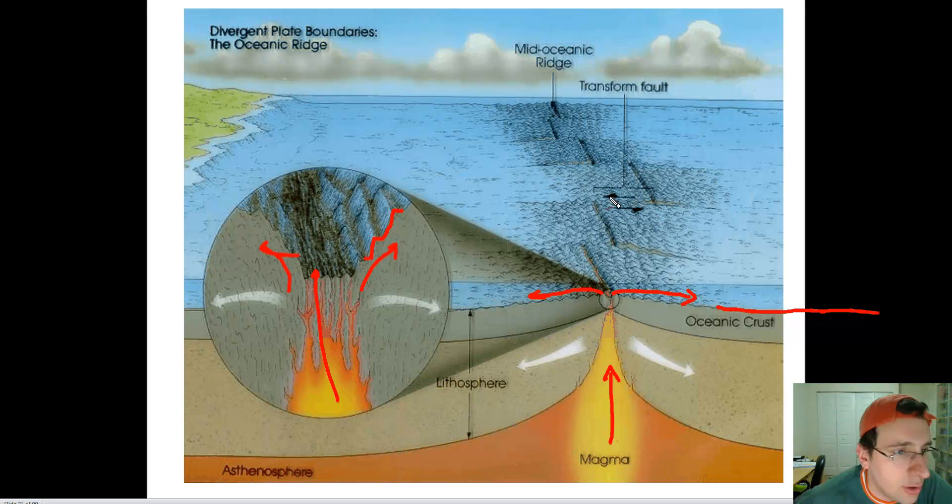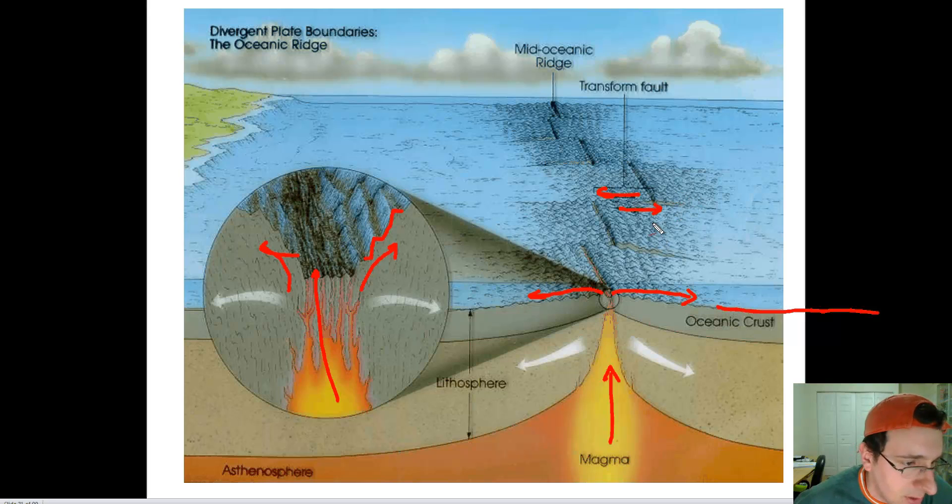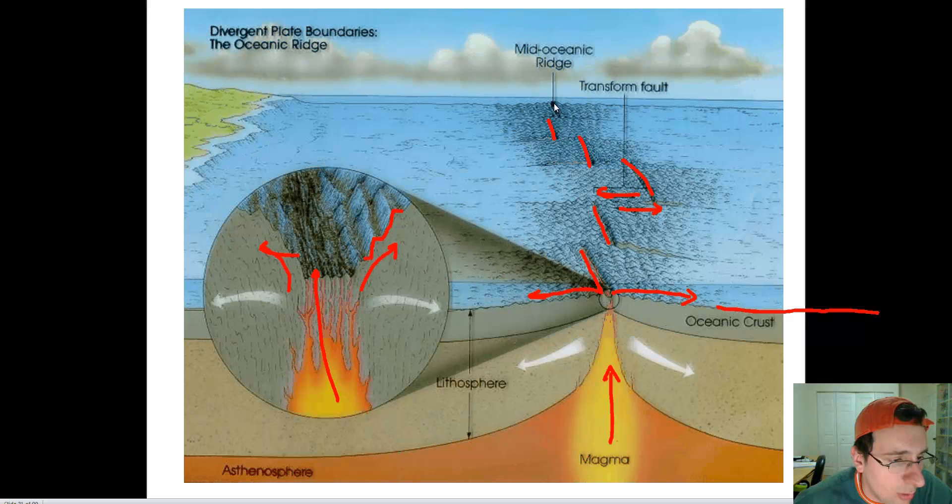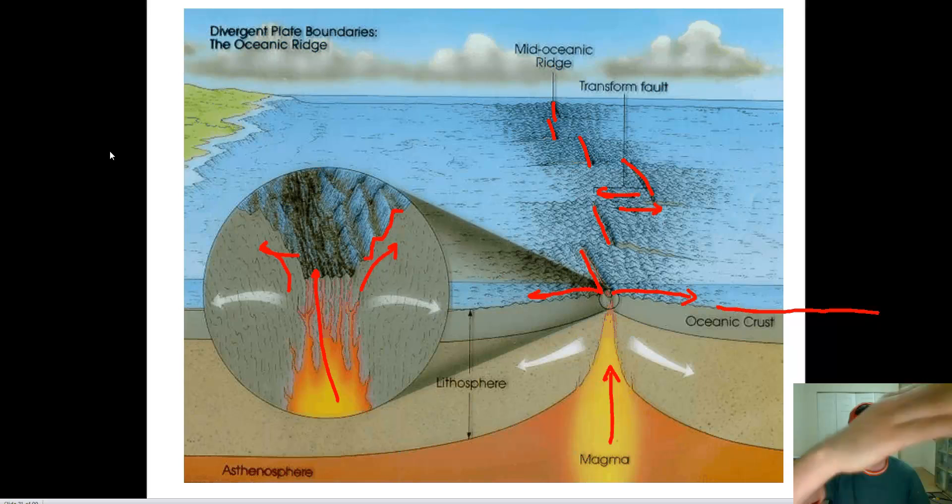Also, remember that you could have a transform fault where one piece is actually moving to the side in relationship to the other piece because of the way the magma is moving underneath that fault line. But overall, you get in the middle of the entire ocean basin a pattern of cracks, one next to each other, not necessarily lined up with each other, but one next to each other across the entire middle of the ocean. That's what's actually spreading the ocean, and this is a perfect example of a divergent boundary.